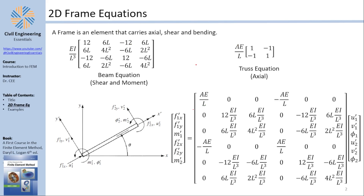The construction of the stiffness matrix of a frame element is rather straightforward. A frame element is an element that carries everything — it carries axial forces, shear forces, and bending moments. With that being said, it's going to be a mix between a beam equation and a truss equation. Basically, if you add the beam equation to the truss equation, you get the frame equation.